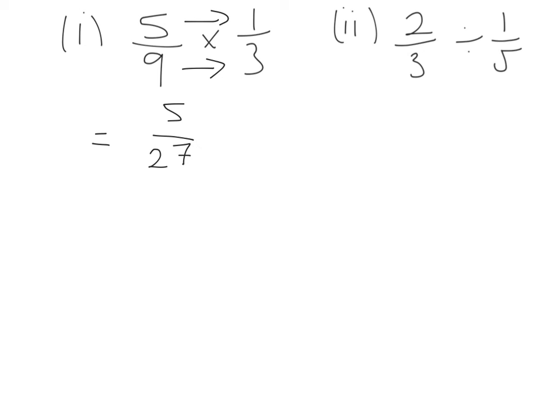To divide fractions, there's a little trick that we do, and we basically keep the first fraction the same. We change the sign into a multiplication sign, and we flip the second fraction. So it basically becomes, instead of 1 fifth, it becomes 5 over 1. So we keep, change, and flip. And then we just do the same as we've done before. So 2 times 5 gives me 10, and 3 times 1 gives me 3.